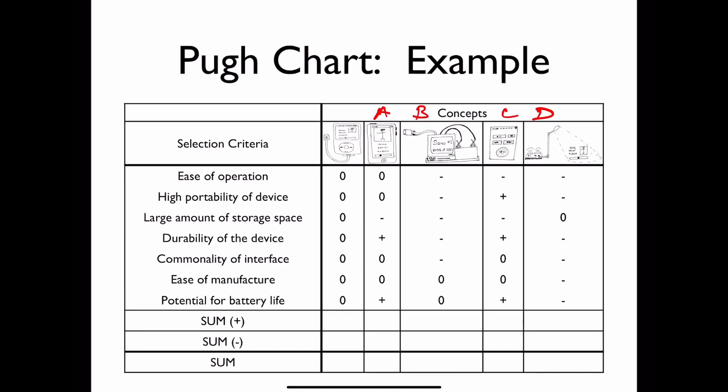Now we're going to evaluate all of our different concepts relative to the datum. So we'll have our concepts A, B, C, and D. And for A here, based on our evaluation, it had two positive aspects and one negative aspects, so for a total score of plus one. For our B concept here, it actually had no positive aspects, relative to the datum, and five negative aspects, so for a final score of negative five.